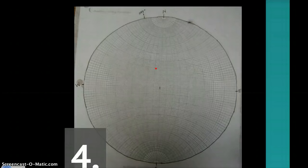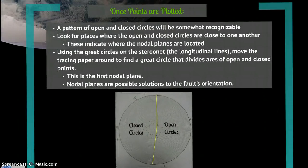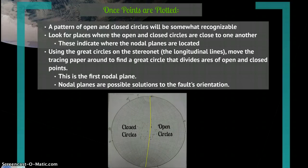So you continue this until all of your points are plotted. And once all your points are plotted, a pattern of open and closed circles will be somewhat recognizable.